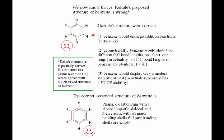His structure did explain a number of properties observed for benzene — for example, it accounts for the observed number of isomers seen when benzene undergoes substitution reactions. But in other respects it had huge problems. If Kekulé's structure were correct, benzene should undergo addition reactions, but it does not. Geometrically, benzene would show two different C-C bond lengths — a short one for the double bond and a long one for the single bond. However, when we look at benzene using high-tech instrumentation, we find that all carbon-carbon bond lengths are the same, namely 1.4 angstroms.